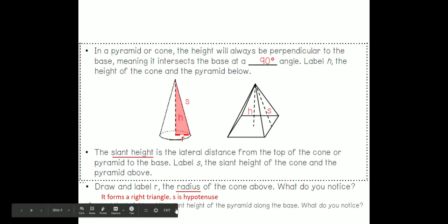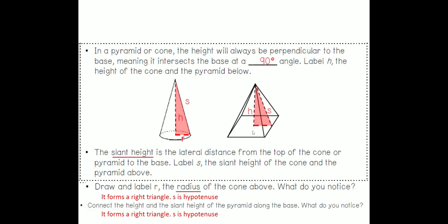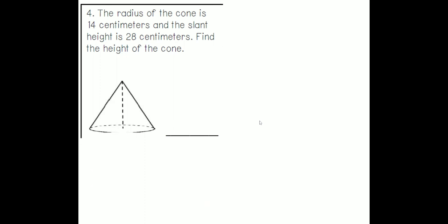They want us to connect the height and the slant height of the pyramid along the base. What do we notice? Well we do connect it and again it forms a right triangle. And notice that the S the slant height again is the hypotenuse or C if we're going to use the Pythagorean theorem.